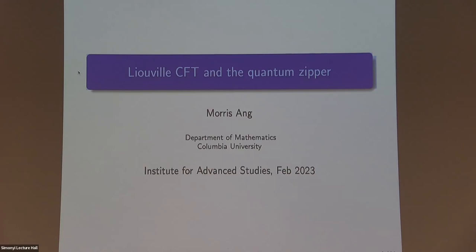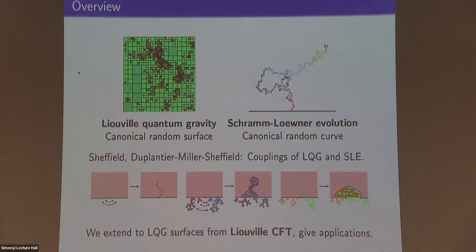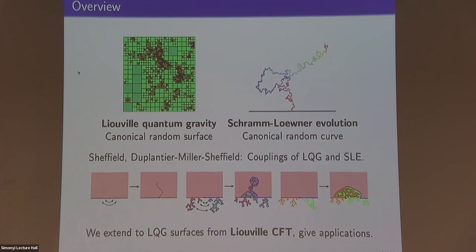Today's talk is about Liouville conformal field theory and its dynamics when you evolve it using the quantum zipper. We are going to discuss random surfaces with conformal symmetries called Liouville quantum gravity, and random curves with conformal symmetries called Schramm-Loewner evolution. In this cartoon, the quantum zipper that Sheffield introduced starts with an LQG surface, glues its left and right boundaries together, and surprisingly what you get is an LQG surface decorated by an independent SLE curve.